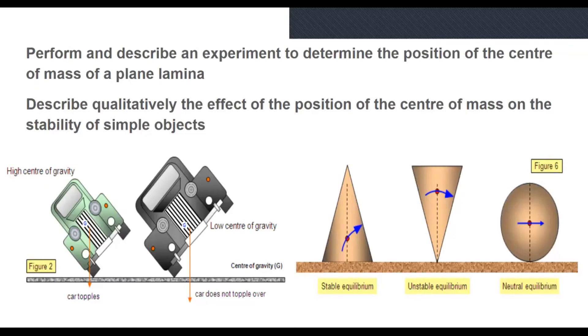You also have to describe qualitatively the effect of the position of the center of mass on the stability of simple objects. If the center of mass is higher it's more likely to topple, but if it's a lower center of mass, low center of gravity, there's less likely a chance of it toppling over. As you can see in the picture of the cars it explains. With shapes, lower stable equilibrium, higher unstable equilibrium will most likely fall, and if it's right in the center then it's just a neutral equilibrium.